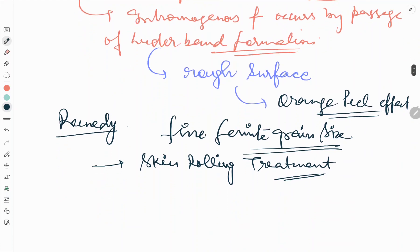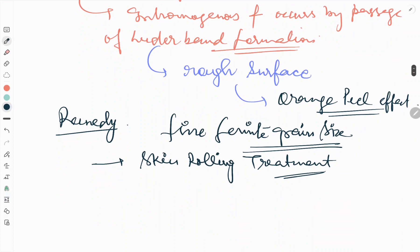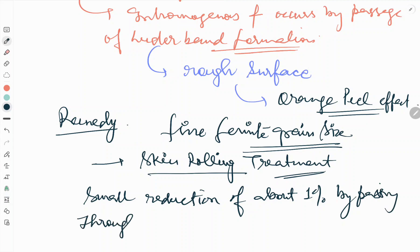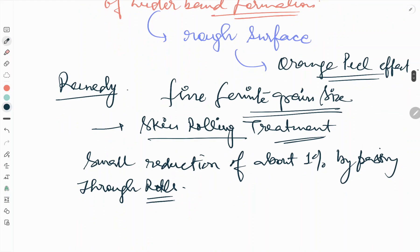Here the sheets are given a skin pass, small reduction. Skin rolling treatment means small reduction of about one percent by passing through rolls. The steel is thereby deformed beyond the yield point and there will be no yield point phenomena.